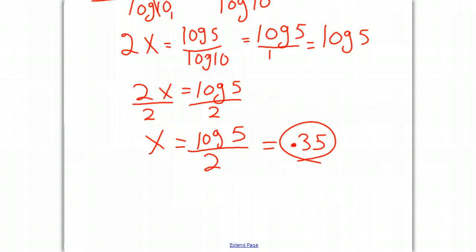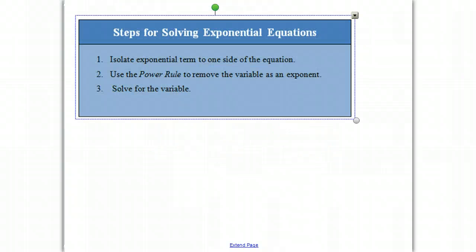And so just to review one more time, the steps for solving exponential equations. Isolate the exponential term to one side of the equation. Don't forget to do that. Use the power rule to remove the variable as an exponent. It's a very simple way of solving these types of problems. And finally, solve for the variable. I hope you enjoyed the show. And I'll see you again next time.